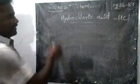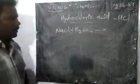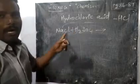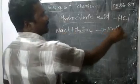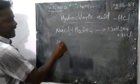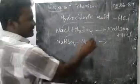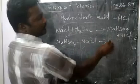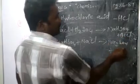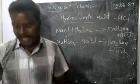We take sodium chloride with H₂SO₄ (sulfuric acid). One hydrogen goes along with Cl to give HCl, and the product sodium bisulfate is formed. The sodium bisulfate is further treated with sodium chloride, another Cl is released, and we get sodium sulfate as well as HCl. This is the important method of preparation of hydrochloric acid.